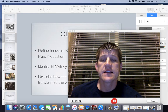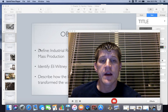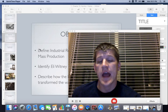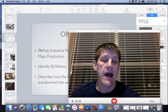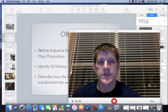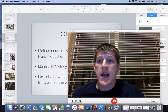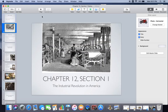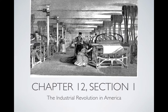Good morning, guys. Today we're going to take a look at the beginnings of Chapter 12, which is a look at life and how citizens in the United States lived in the northern states. We're going to start off with Chapter 12, Section 1, titled The Industrial Revolution in America.